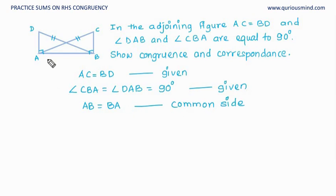And we can see that this is a right angle. AB is one side of the right angle. AC and BD are the hypotenuse of this right angle respectively. And hence using RHS congruency, we can conclude that these two triangles are congruent. So triangle CAB is congruent with triangle DBA.